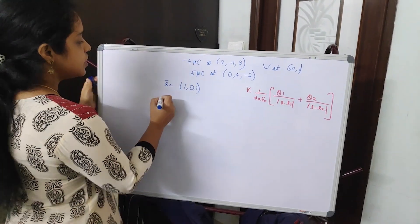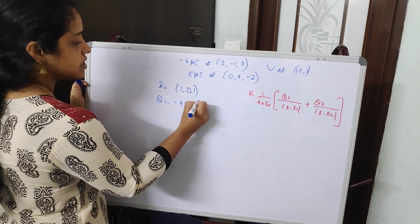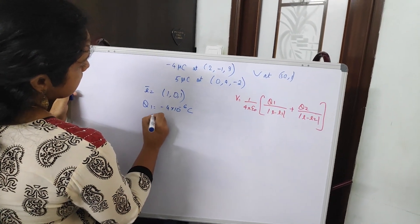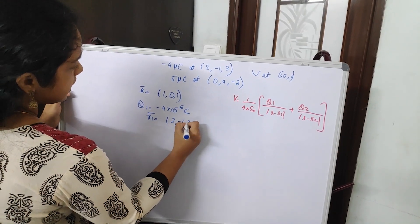In addition, you need q1 which is minus 4 into 10 raised to minus 6 coulomb. Then vector r1, that is location of q1, that is 2 minus 1, 3.